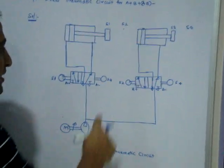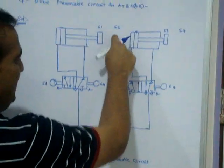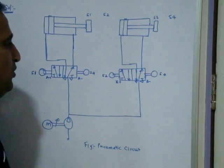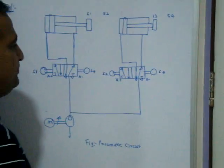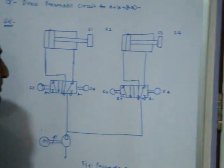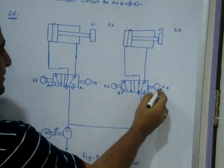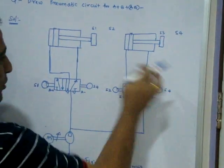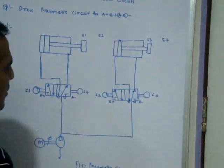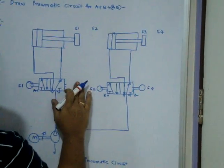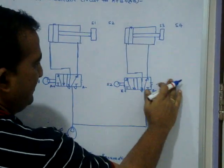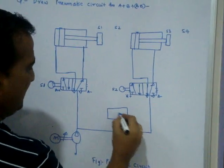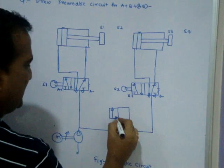The problem is you cannot write S4 and S4 for both valves — same connection to two places is not working. Only one S4 connection you can give. So, what I will do? I will take one more valve — a 3/2 valve. A 3/2 is sufficient in this case. But you have to take care.